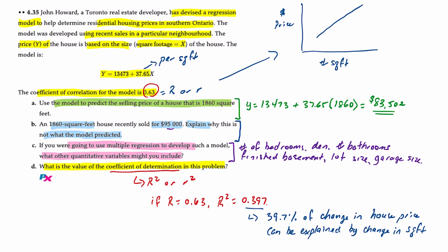If we were to then add additional factors like number of bedrooms, den, bathrooms, etc., what would happen is the R squared would increase to create a more robust and more accurate model. And that's it for this question on simple linear regression.